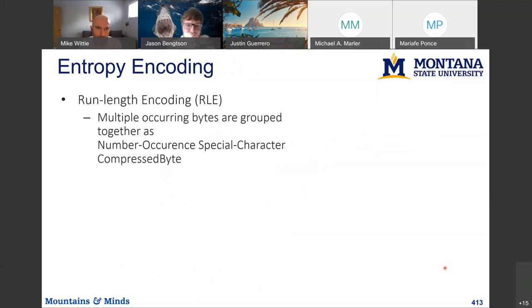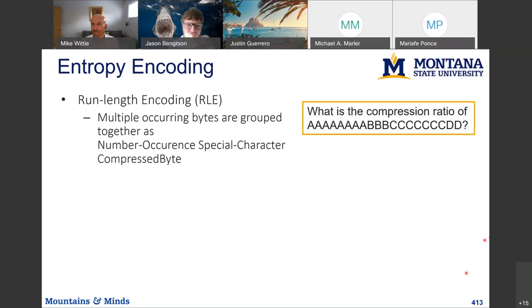In run-length encoding, multiple occurring bytes are grouped together as the number of occurrences, a special character, and a compressed byte. For example, eight A's can be encoded as '8!A'. You can reduce a string to 12 characters using this encoding — eight-bang-A, three-bang-B, seven-bang-C, two-bang-D — that's 12 out of 20, so your compression ratio would be 40%.